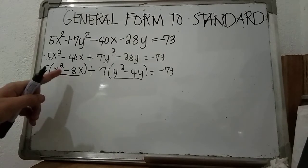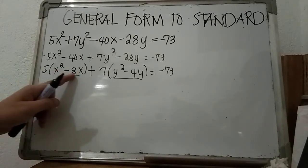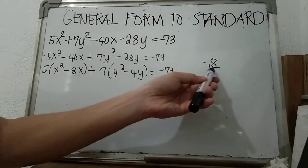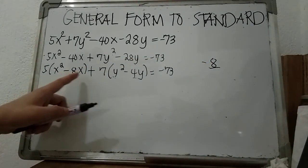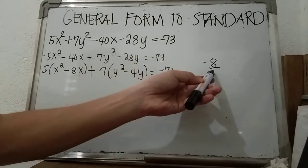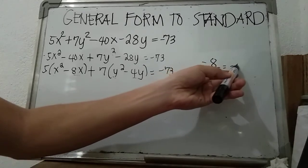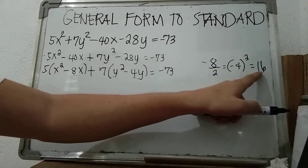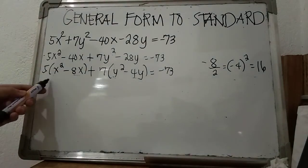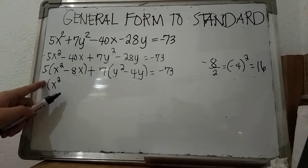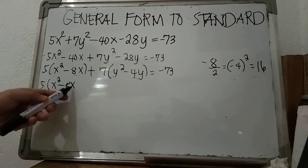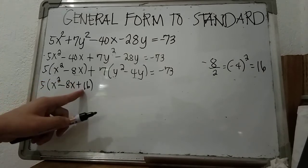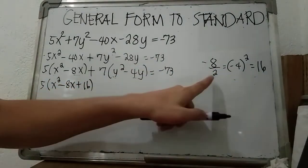Now we complete the perfect square trinomial. Take the coefficient beside x, which is negative 8, divide it by 2 — the quotient is negative 4 — then square it to get 16. This value, 16, is what we add inside the parenthesis: 5 times (x squared minus 8x plus 16).